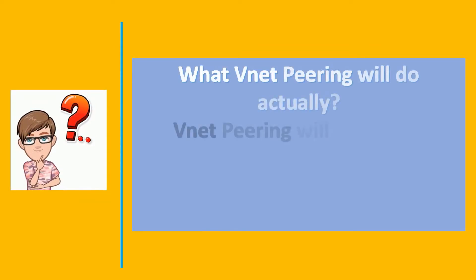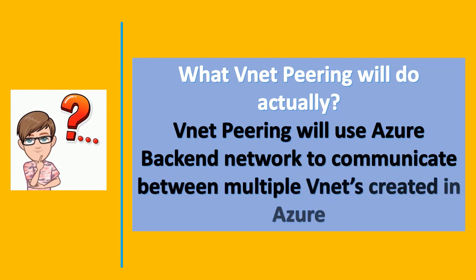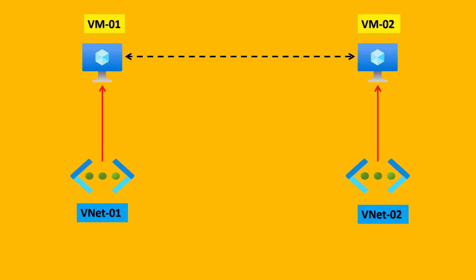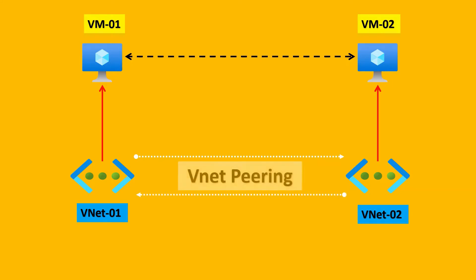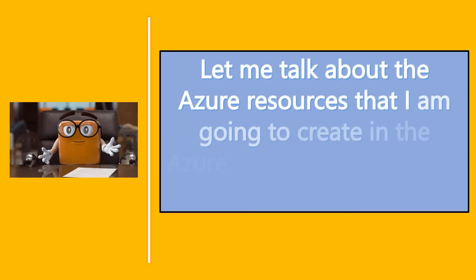Let's understand what VNet Peering does and how it works. VNet Peering uses the Azure backend network to communicate between multiple virtual networks created in Azure. So if two virtual networks want to communicate with each other, we need to enable VNet Peering. Taking the example of VNet 01 and VNet 02 shown on screen, to communicate between these two virtual networks I'll have to enable VNet Peering at both virtual network levels. Once VNet Peering is enabled, the resources in both virtual networks can talk with each other and perform data transfer as well.